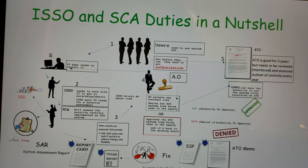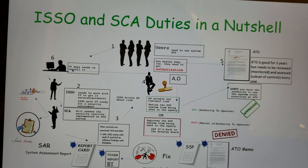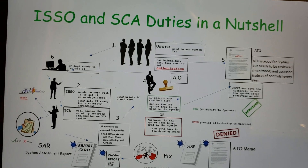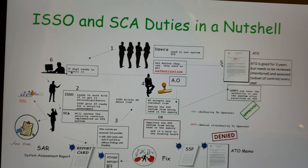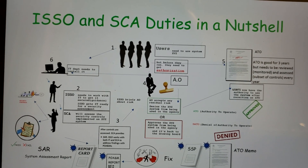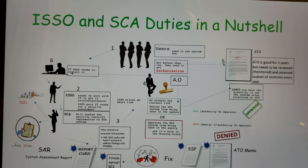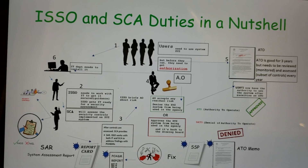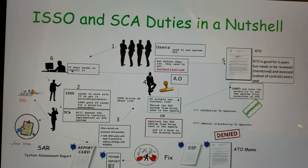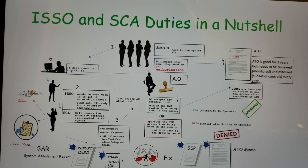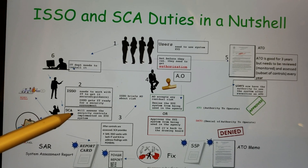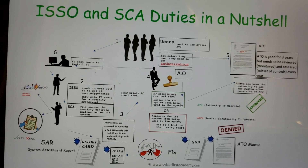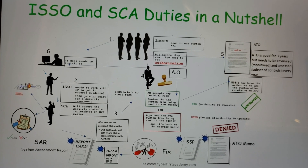Once the ISO gives guidance, the project team — the administrator, developer, or whoever is doing the installation — goes ahead and implements the security controls based on the ISO's guidance. Then the Security Control Assessor audits and assesses those controls to see if they're operating according to compliance guidelines.